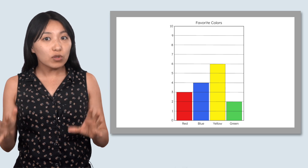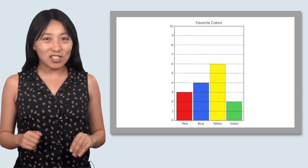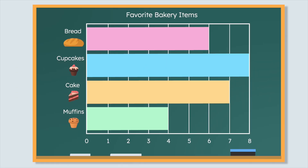Let's see if we can use our new knowledge to solve Mia's mystery. Mia wants us to use this graph to figure out which bakery item is most popular. What type of graph does this look like? It's a bar graph — we can tell because of the bars that represent the data. This time the bars are sideways, but we read it just the same. The items people could vote for are on the side: bread, cupcakes, cake, and muffins.